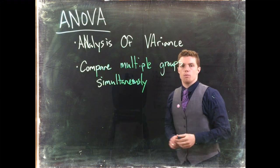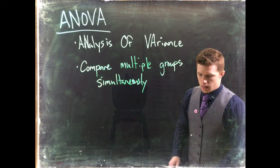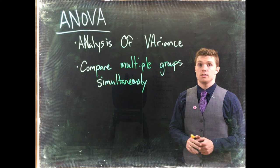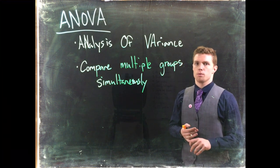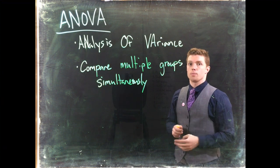Previously we've done one sample testing where we tested one sample against a theorized value. Then with two sample hypothesis testing, we started testing two things against one another, whether they be proportions or means. With means, we were really only able to do two at a time.